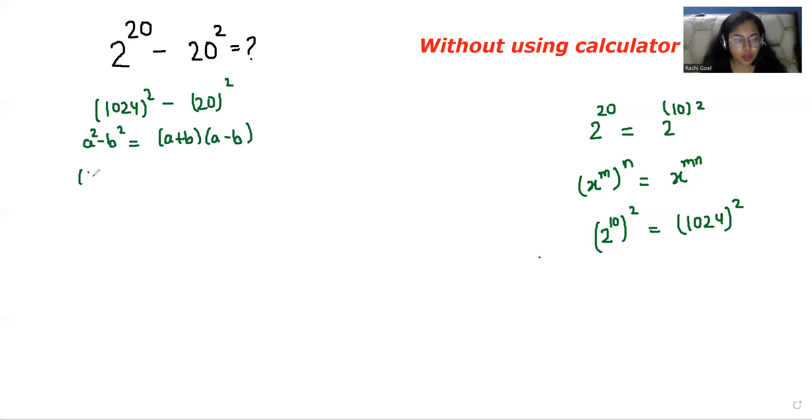So I can write (1024 + 20)(1024 - 20). 1024 plus 20 is 1044, and 1024 minus 20 is 1004. So 1044 can be written as 1000 + 44, and 1004 as 1000 + 4.